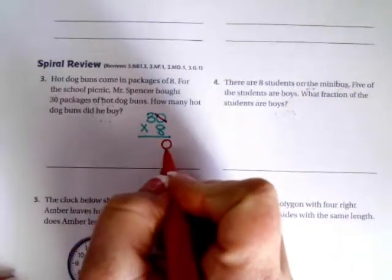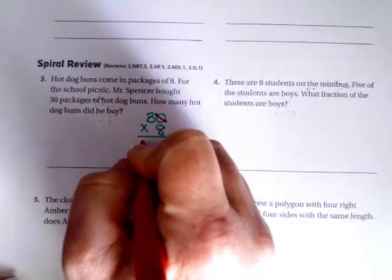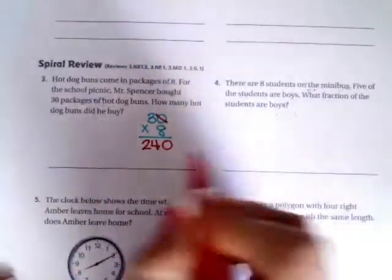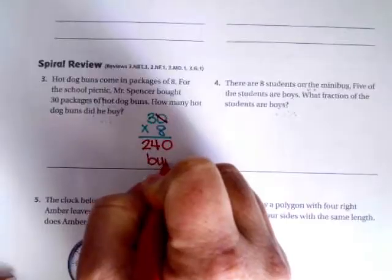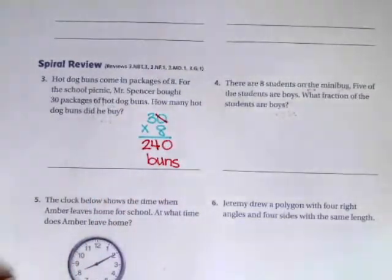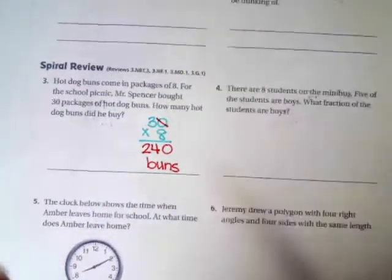Because eight times zero is zero. And then eight times three is 24. So 240 buns. Make sure that you label it. It's a word problem. It needs a word answer.